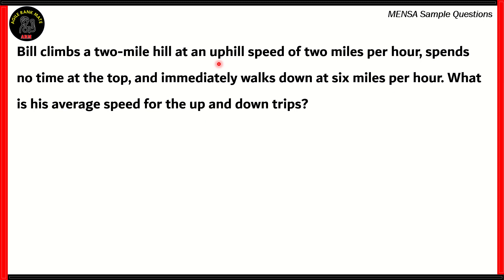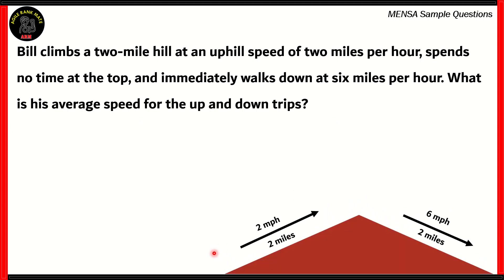Bill climbs a two-mile hill at an uphill speed of two miles per hour, spends no time at the top, and immediately walks down at six miles per hour. What is his average speed for the up and down trips? Now let's look at a simulation of what that might look like. So Bill climbs up two miles at a speed of two miles per hour and then climbs down at a speed of six miles per hour. We need to find out his average speed.